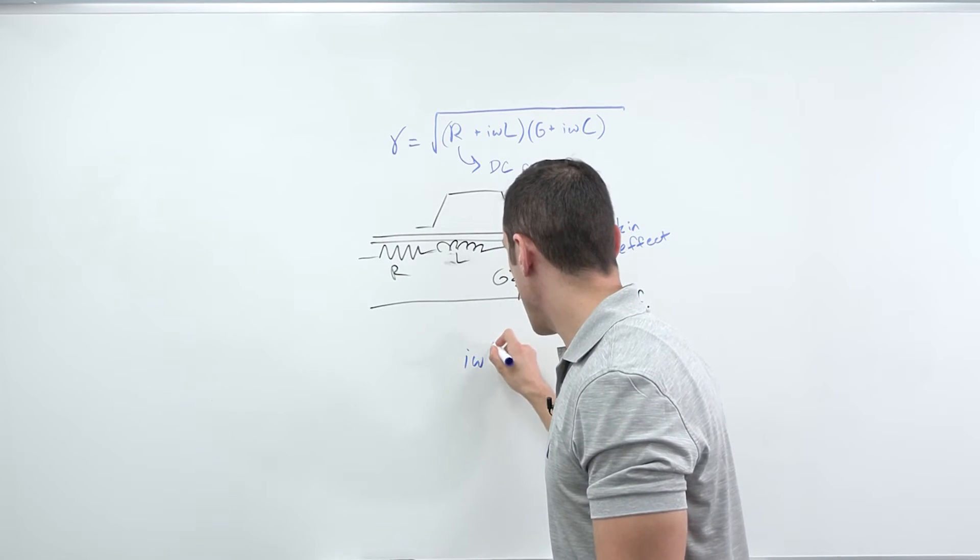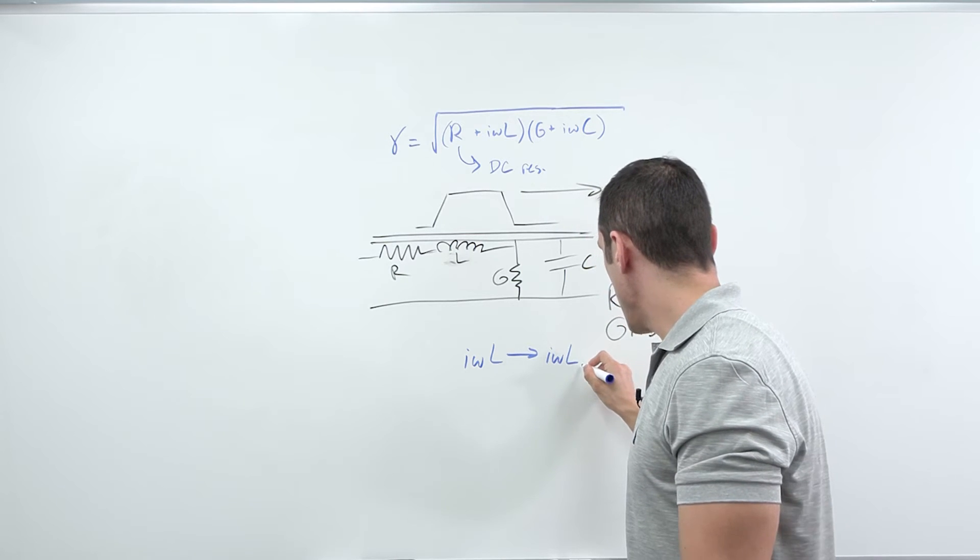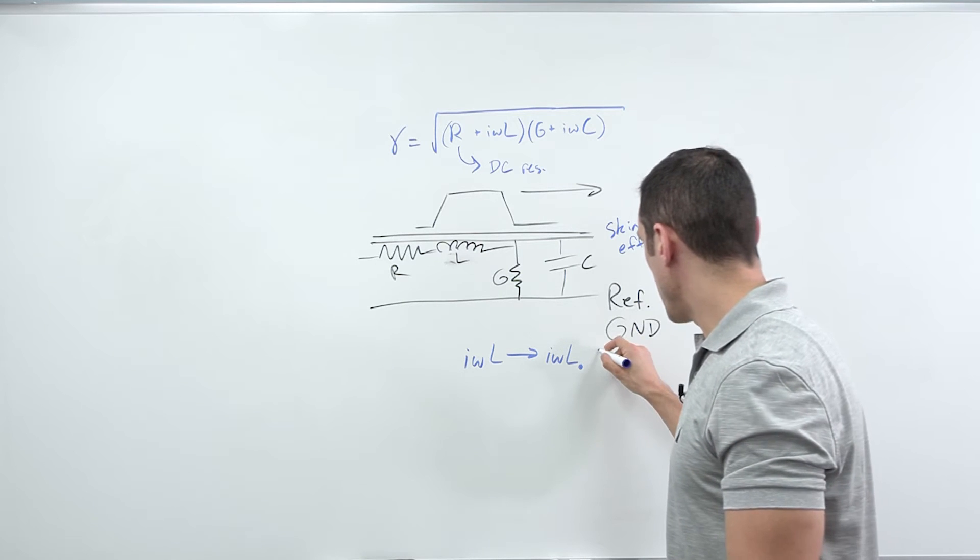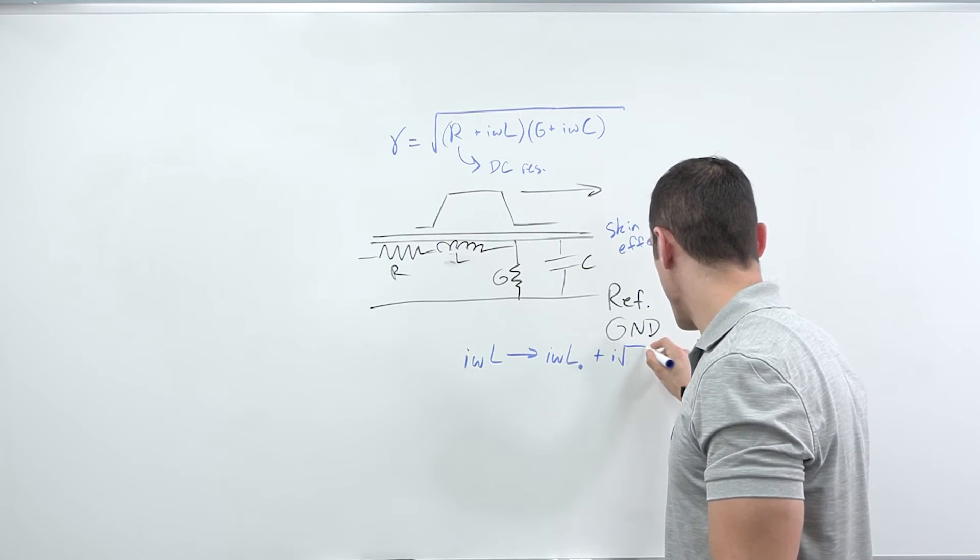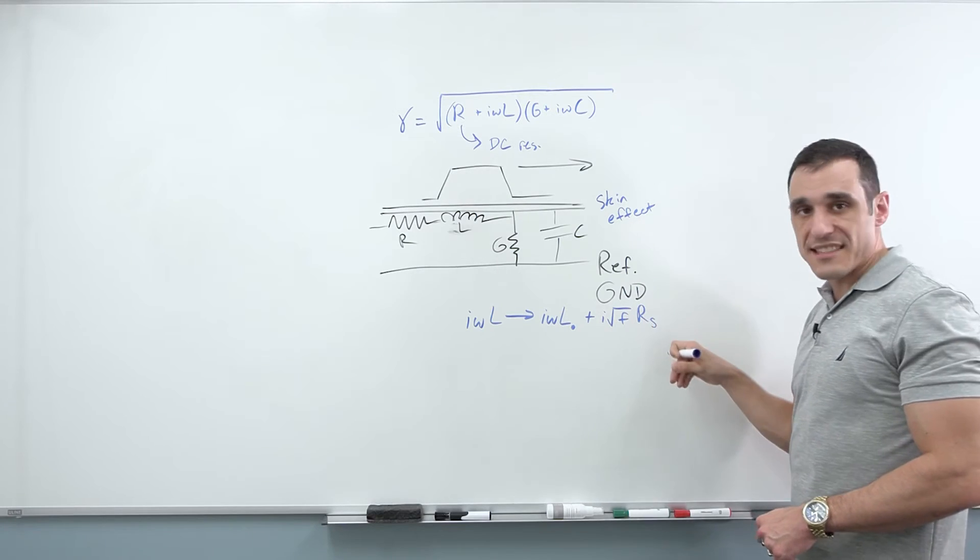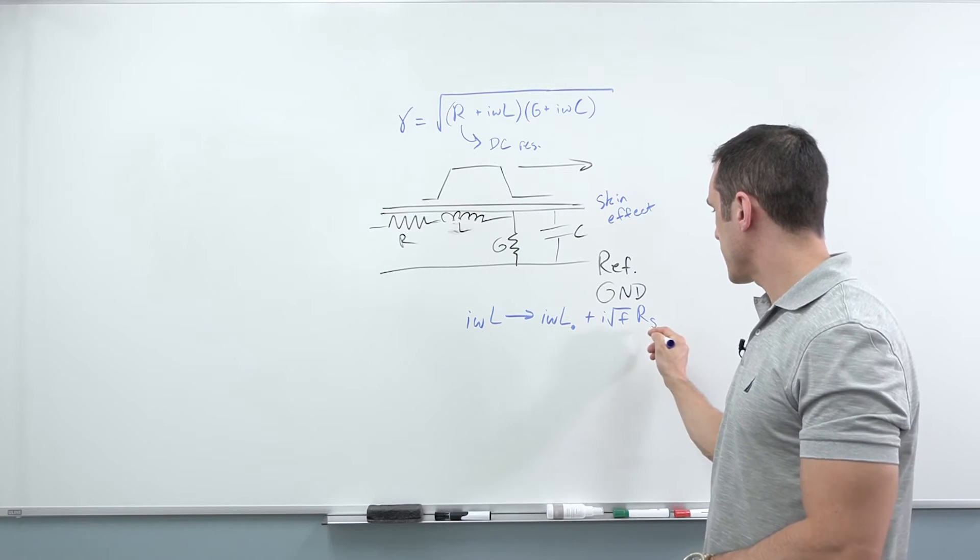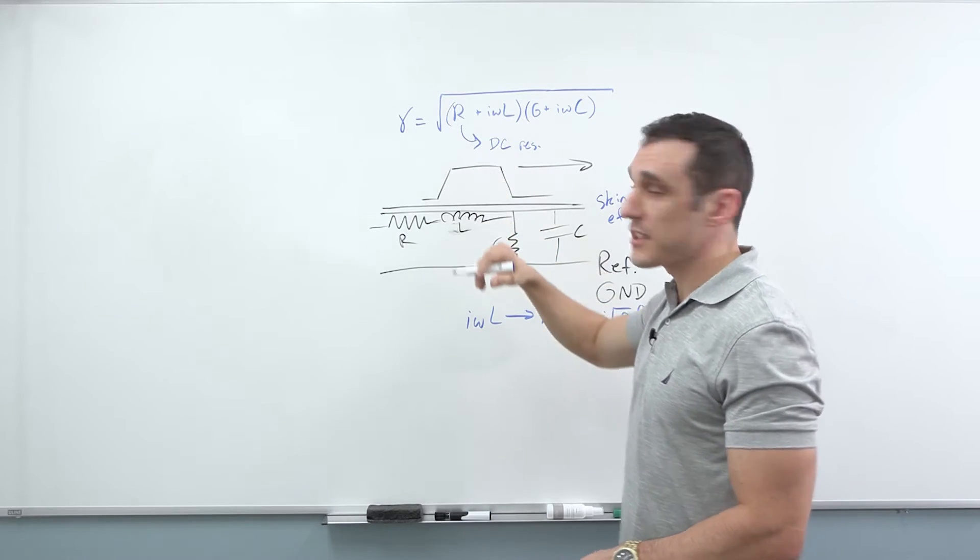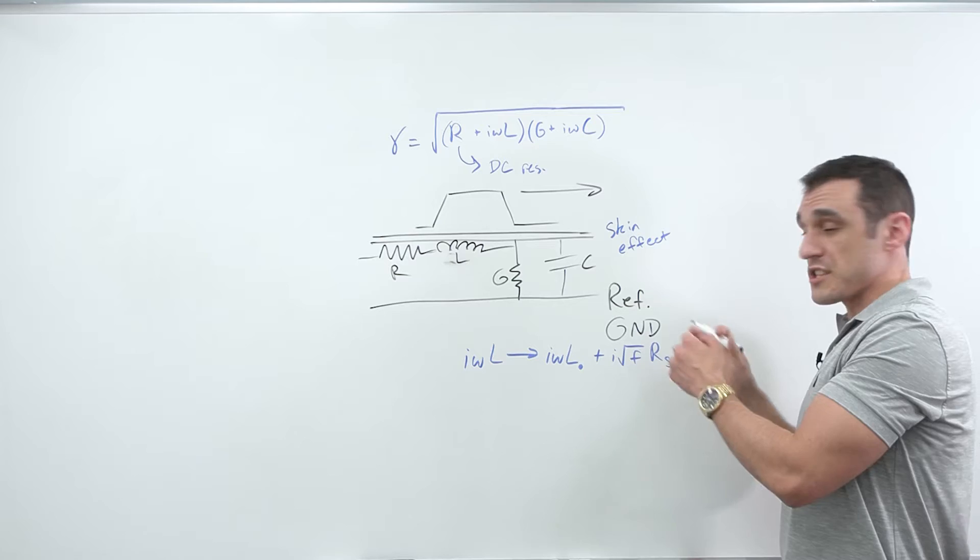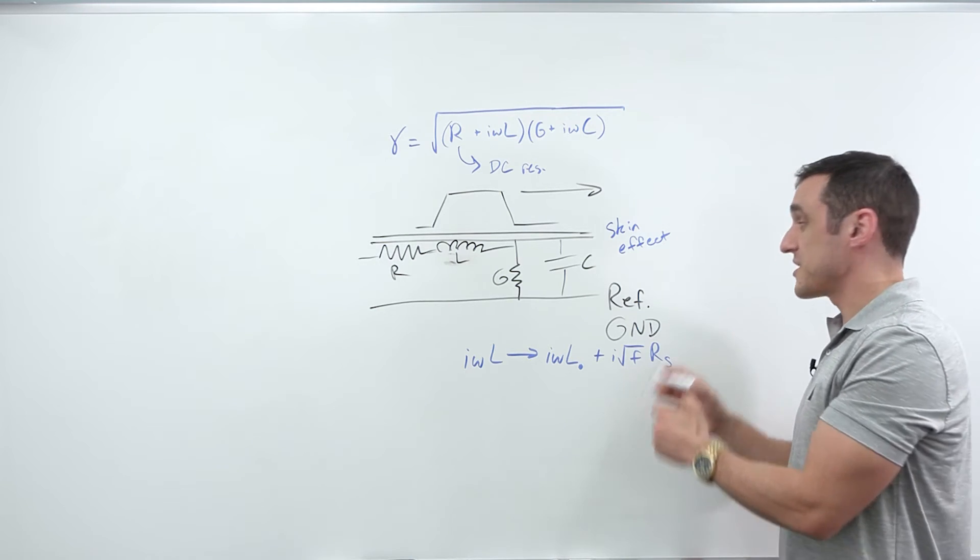And the skin effect creates some additional inductance here that is proportional to the square root of frequency. So what that means is that I omega L actually transforms into some I omega L sub zero. We'll just say the inductance is if there was no skin effect plus some I times square root of frequency times some skin resistance. This adds in some additional inductance through this I term here on the right hand side of this transformation into the inductance in the transmission line. And so what that does is it creates some additional loss.